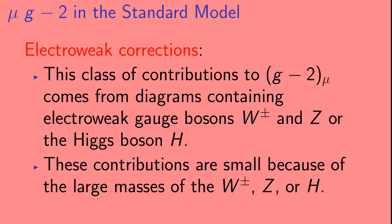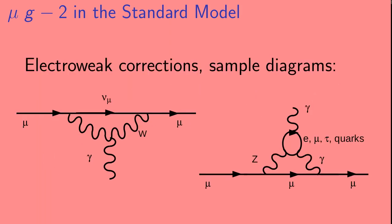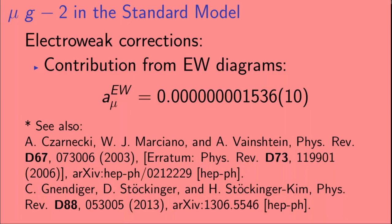Now on to the electroweak corrections. This class of contributions comes from diagrams containing electroweak gauge bosons — the W or the Z — or the Higgs boson H. These contributions are small because of the large masses of the W, Z, and Higgs. As the electroweak contributions are smaller, it's not necessary to go to such high precision, so the calculation for these terms only goes up to two loops. Example diagrams include a one-loop diagram on the left and a two-loop diagram on the right. The result for the electroweak contribution to A_mu is way, way smaller than the QED corrections.